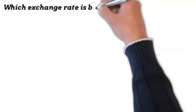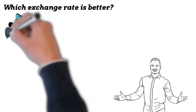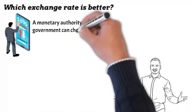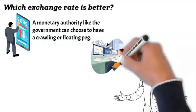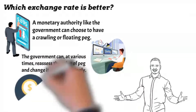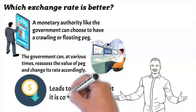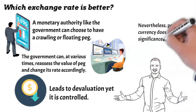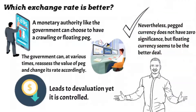Which exchange rate is better? A monetary authority like the government can choose to have a crawling or floating peg. This implies that the government can, at various times, reassess the value of the peg and change its rate accordingly. Of course, this leads to devaluation, yet it is controlled. Nevertheless, peg currency does not have zero significance, but floating currency seems to be the better deal.